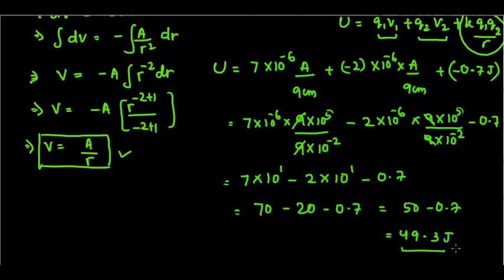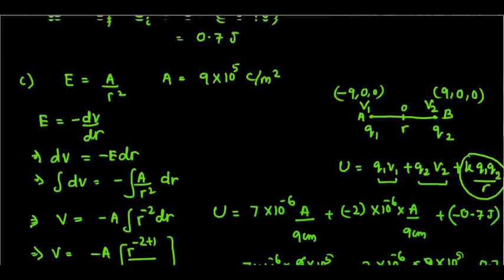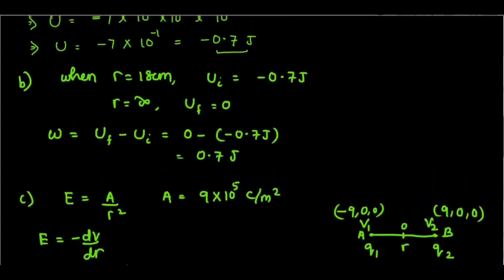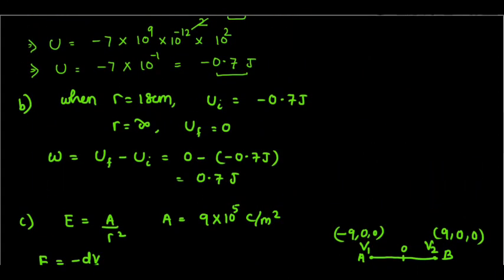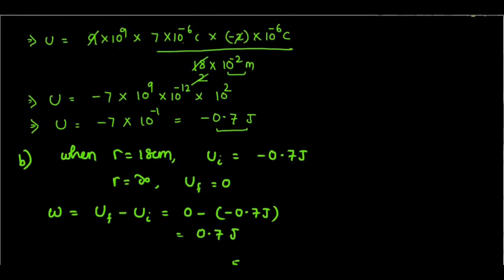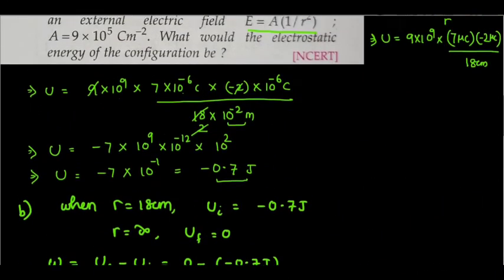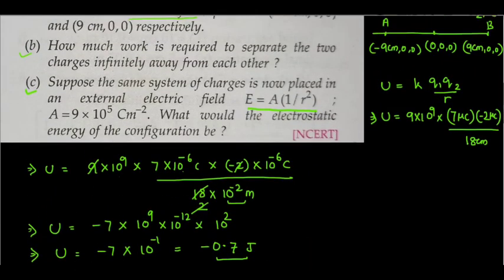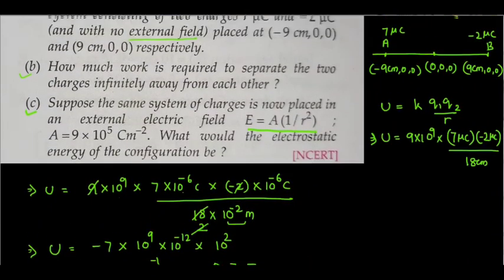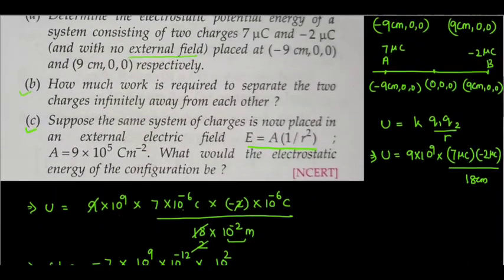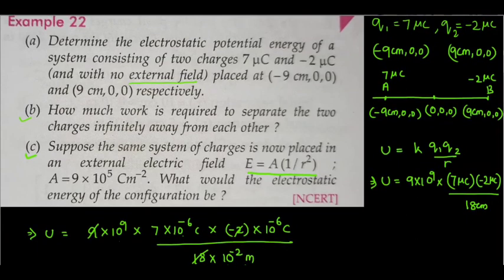In the presence of the external electric field, the potential energy of the system is 49.3 joules, compared to minus 0.7 joules in the absence of the field. That's the complete procedure for solving this question. If you have any doubts you can ask in the comment section. See you in the next class — have a nice day, bye bye.